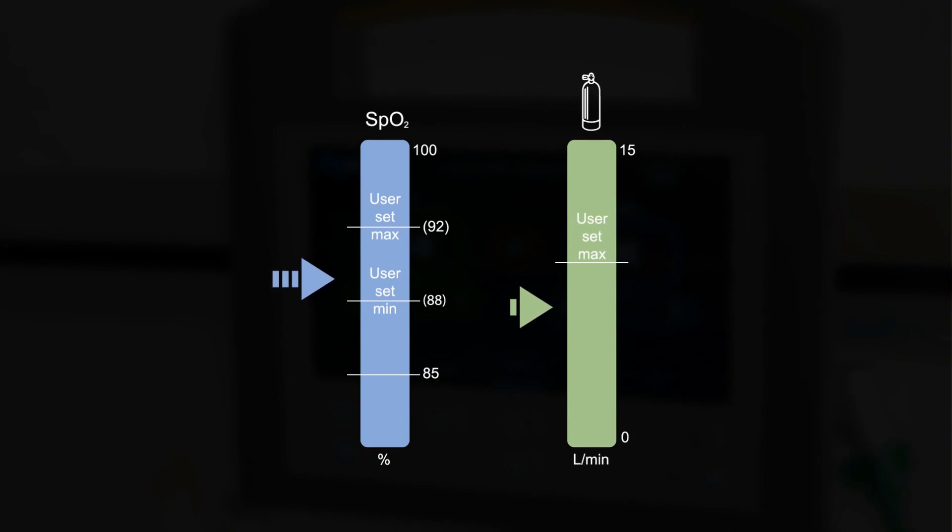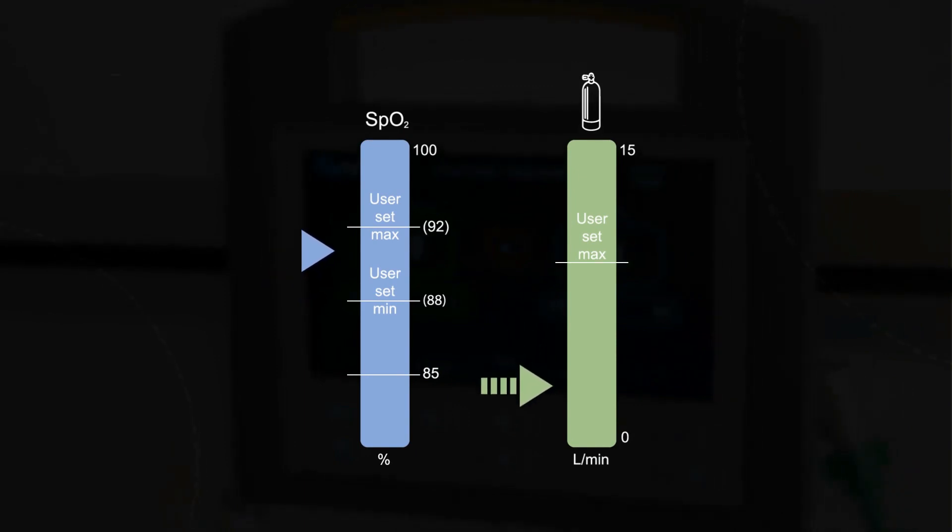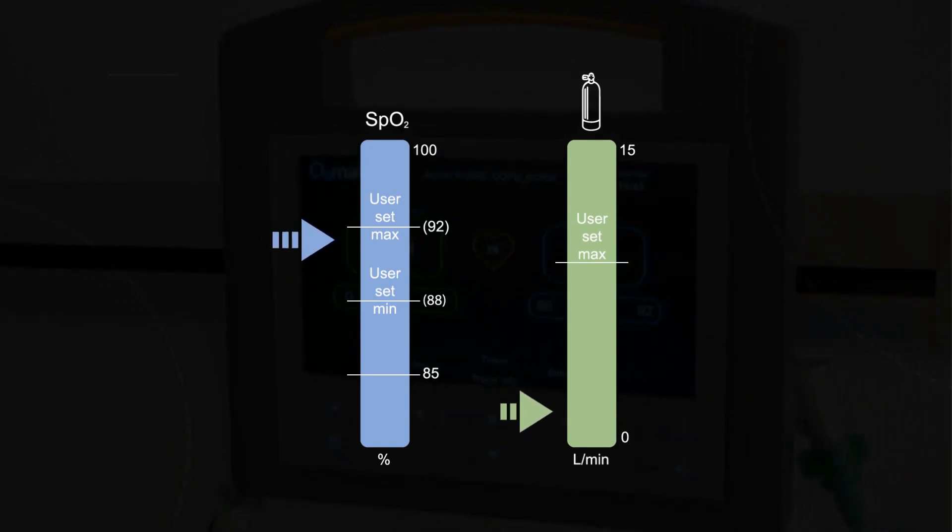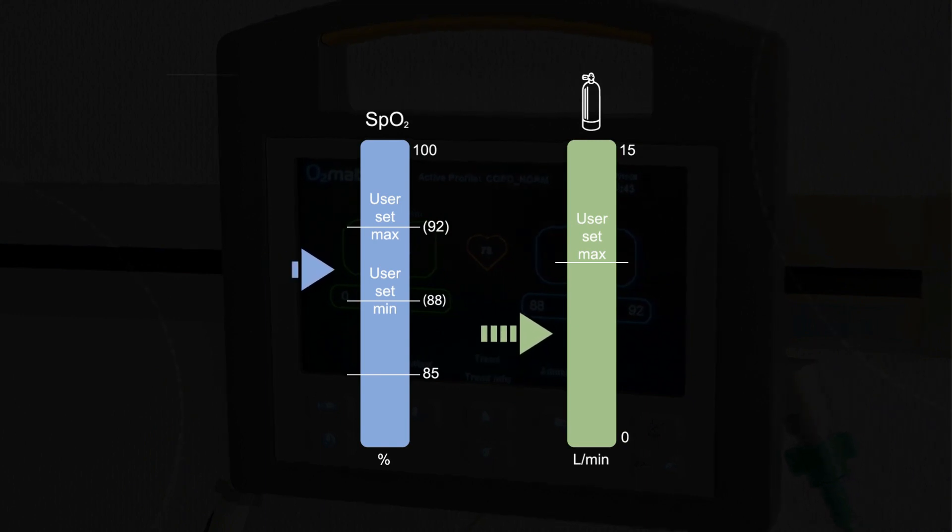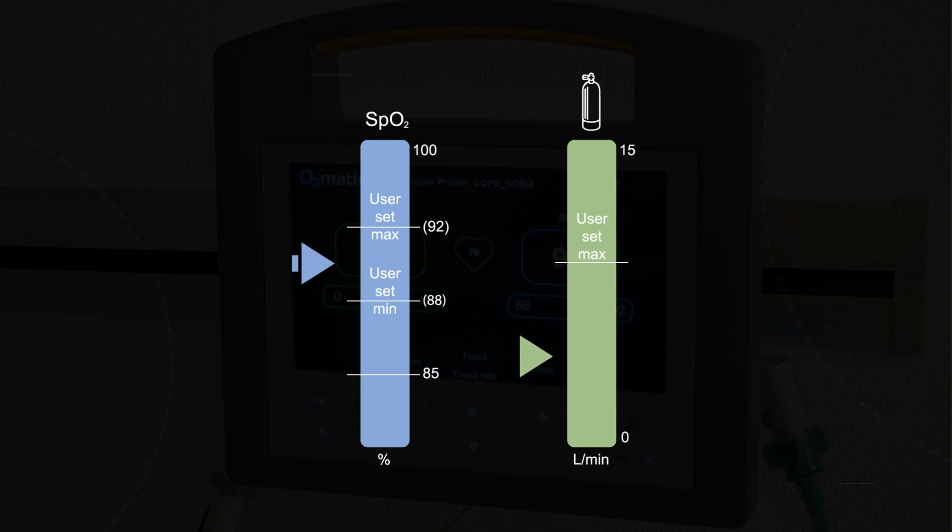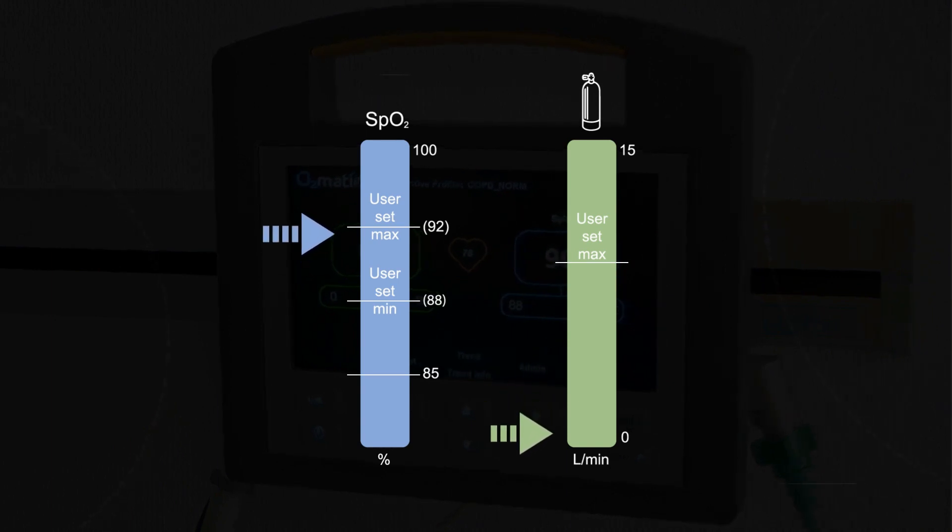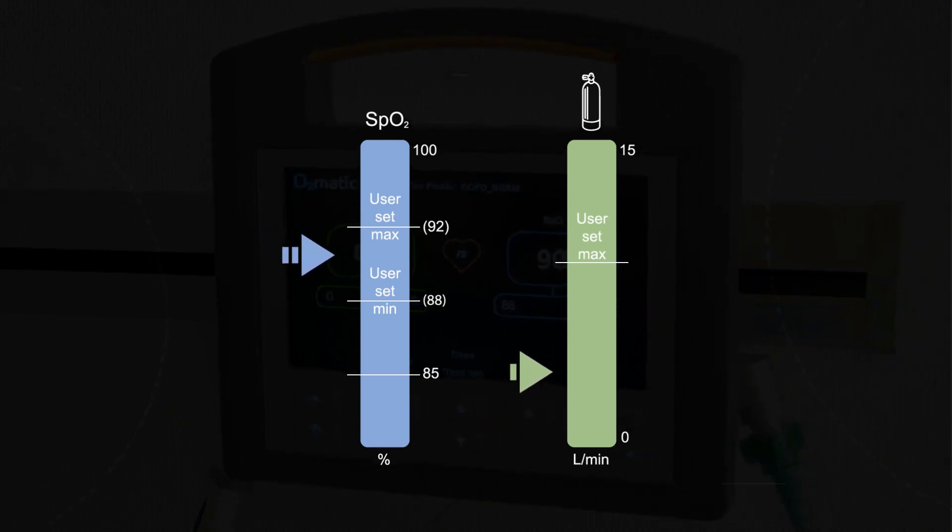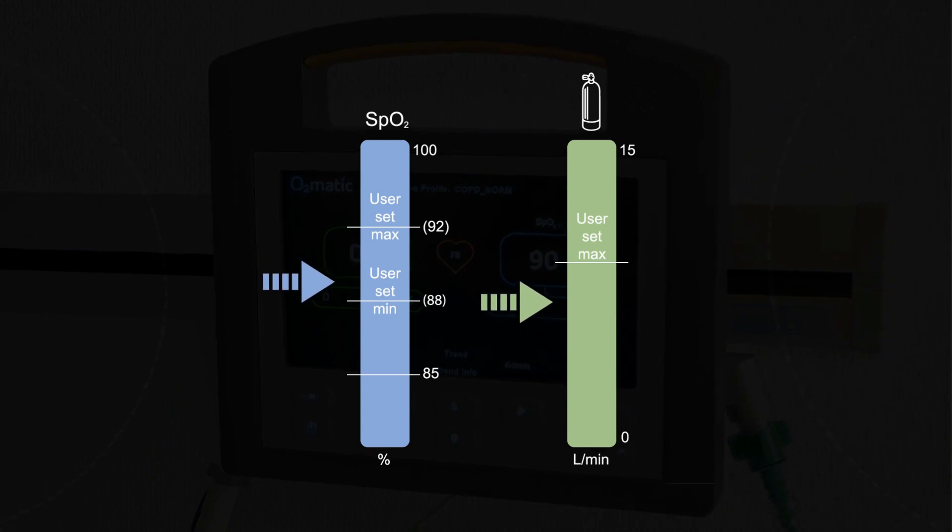O-matic is a closed-loop system which continuously measures the patient's oxygen saturation by pulse oximetry and adjusts the oxygen flow to maintain the saturation within a target interval. O-matic is designed for hospital use and in this study it was used on respiratory wards for patients with COPD.